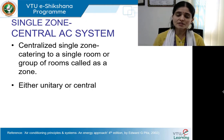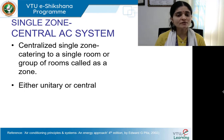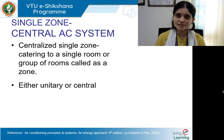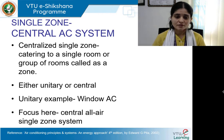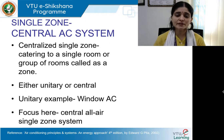Under single zone central AC system, the definition is a centralized single zone catering to a single room or group of rooms, which is called a zone. Either unitary or central systems can be applied. When catering to a single room, we normally adopt a unitary system — for example, window AC, split AC, or package AC. In this section, we will look at the central air conditioning system which is the all air single zone system.